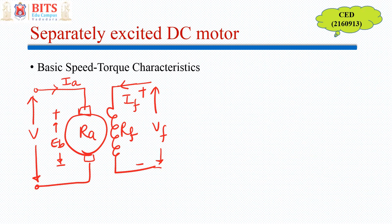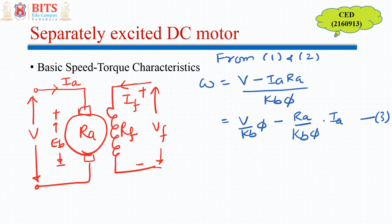From these equations we can write that speed is back EMF divided by Kb times φ, which equals (V - IA·RA)/(Kb·φ). If I rearrange the terms, I get this form, with φ in the denominator.